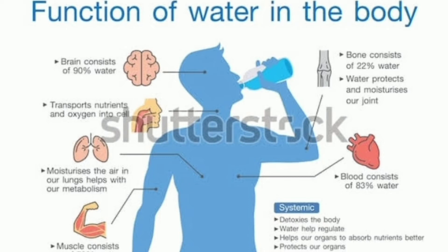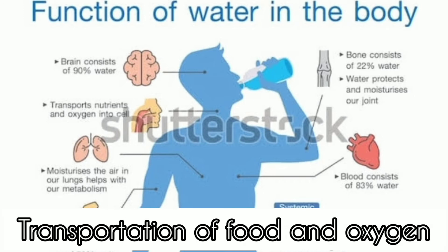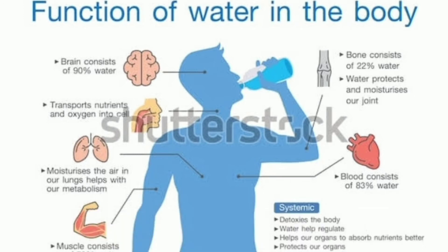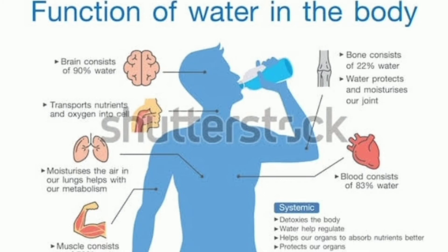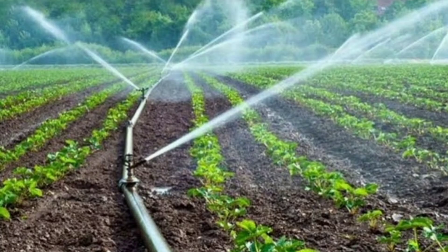Third function of water in our human body is transportation of oxygen and food. Humko pata hai humara body me billions and trillions of cells hai. Har cell achi tarah kaam karne ke liye usko food milna chahiye, usko oxygen milna chahiye. So ye oxygen aur foods asabhi cells ko paani ki waja se milte hai. Fourth one is to remove the waste material from the body in the form of urine and sweat. So these are the major functions of water inside the human body.